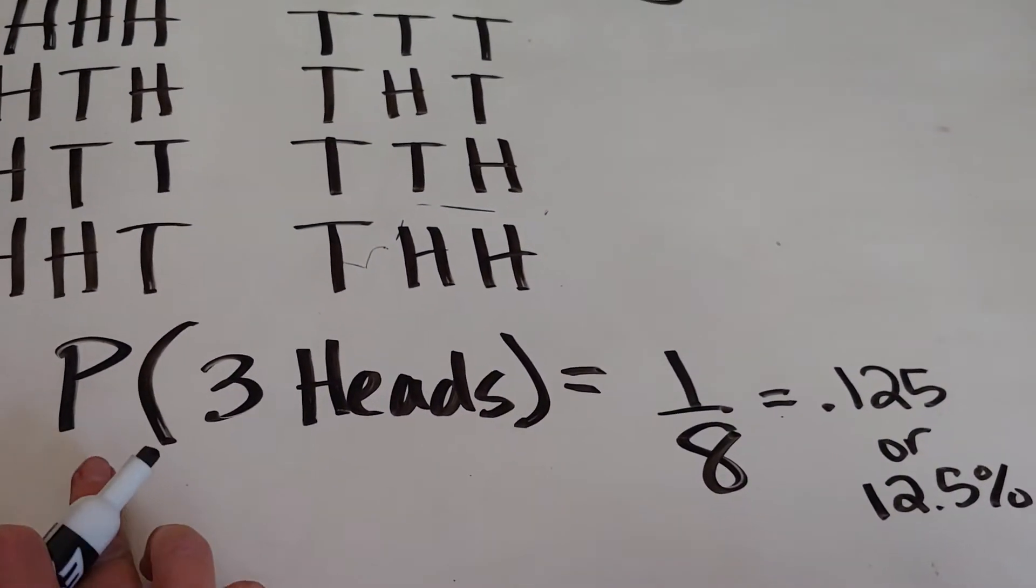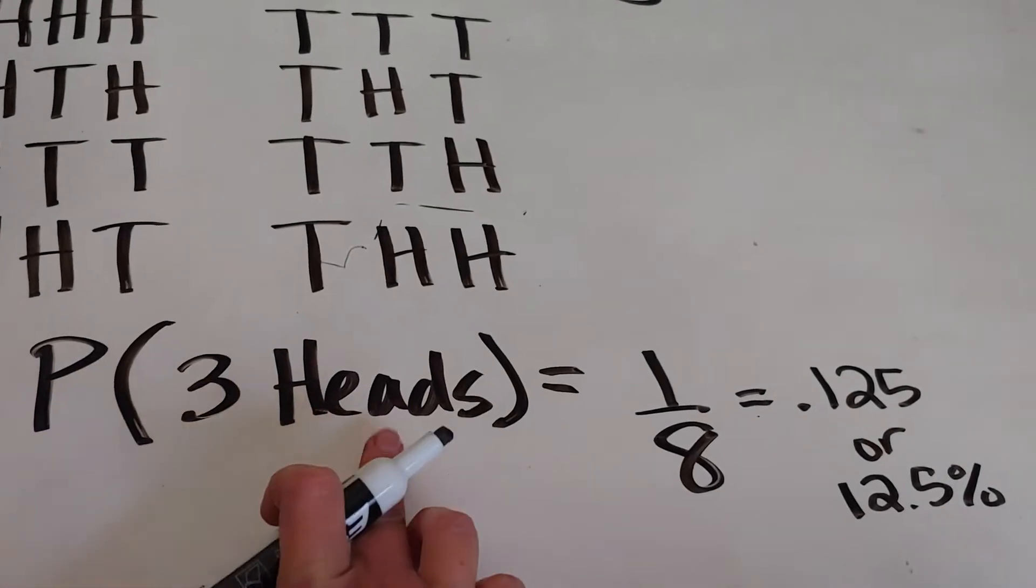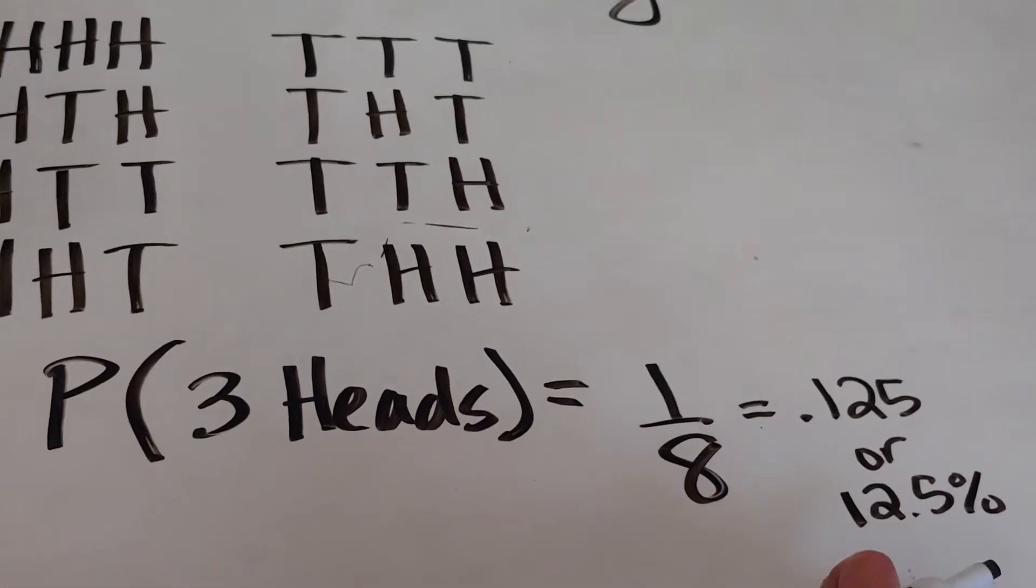Now let's think about it. What would be the probability of getting three tails? It's going to be the same, right?